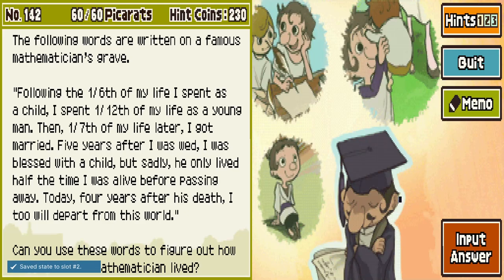Been a while since we were in Dropstone. The following words are written on a famous mathematician's grave: following the sixth of my life I spent as a child, I spent a twelfth of my life as a young man. Then a seventh of my life later I got married. Five years after I was wed I was blessed with a child, but sadly he only lived half the time I was alive before passing away. Today, four years after his death, I too will depart. Can you use these words to figure out how many years the mathematician lived?